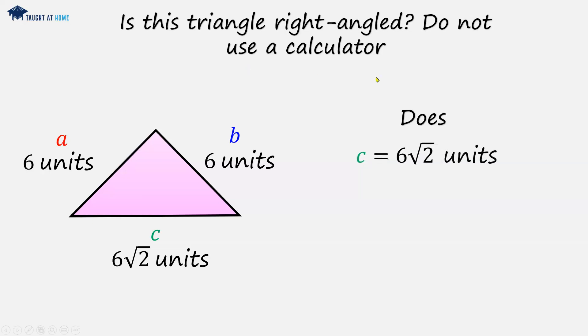And we can see that yes, c does equal 6 times root 2 units. So it is right angled.